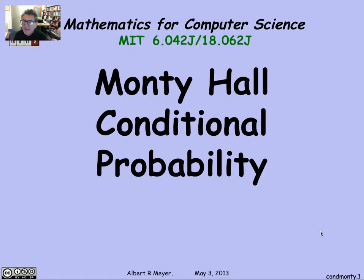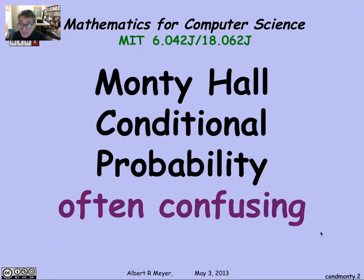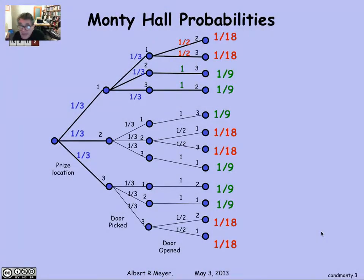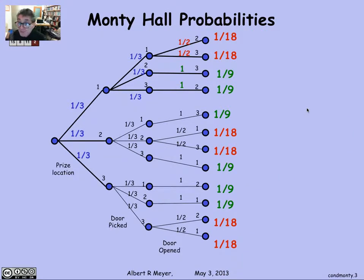Conditional probability will let us explain a lot of the confused arguments that people brought up about Monty Hall. We'll see that it is a little bit confusing, and there are some correct-sounding arguments that give you the wrong answer. So let's go back and look at our Monty Hall tree that allowed us to derive the sample space and probability space for the whole process of the prize being placed, the contestant picking a door, and Carol opening a door. This tree was more complicated than needed just to find the probability of winning if you switch, but it lets us discuss other events and arguments that gave the wrong answer.